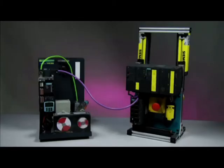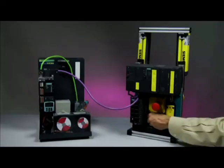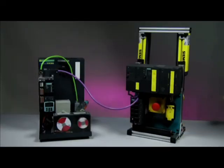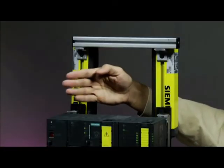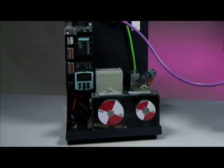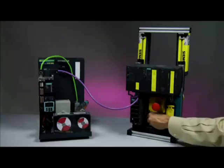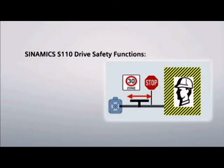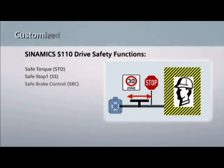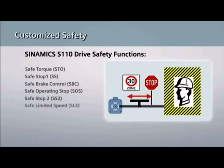The Sinamics S110 is also capable of advanced safe motion functions common with today's automation environments. As demonstrated by breaking the light curtain, the speed is reduced to a safe speed and monitored until the hazard area is cleared and a resume command is issued. Seven safety-integrated functions provide highly effective application-oriented protection for personnel and machinery.